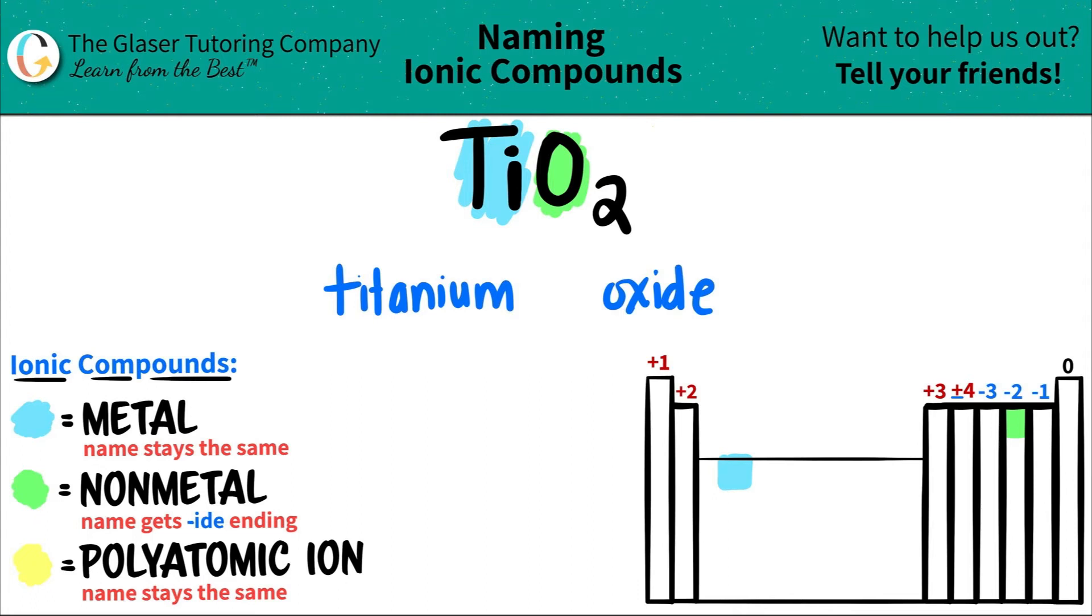Now we say to ourselves, do we need a Roman numeral in this compound? Well, it always depends on the metal. And titanium, since it is part of the transitional metal block, I do need a Roman numeral. And remember, the Roman numeral is always the charge of the metal. Well, now how are we going to get the charge? Well, that's pretty easy.